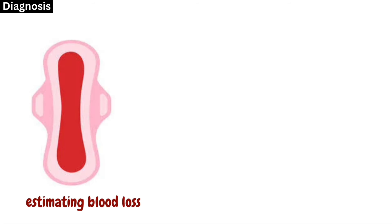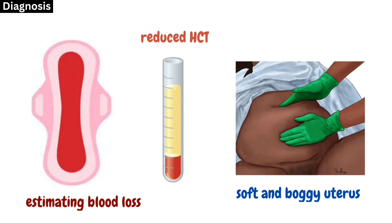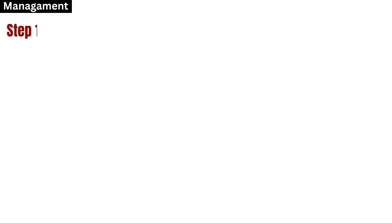Additional signs include enlarged uterus as it fills with blood, and maternal collapse can also occur. For the diagnosis of PPH, we estimate blood loss by counting the number of saturated pads. Almost a 10% reduction in hematocrit occurs in PPH. On palpation, the uterus feels soft and boggy due to atonicity; however, in traumatic PPH the uterus is well contracted.